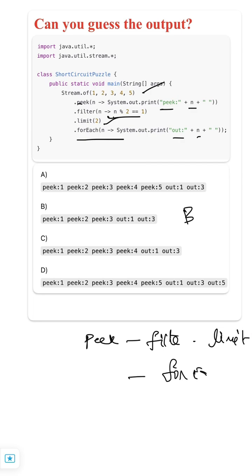So here what will happen? First it will come 1, it will print. Then 1 is an odd number so it will print peak 1, out 1.